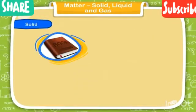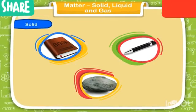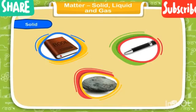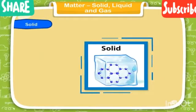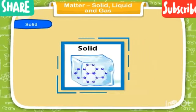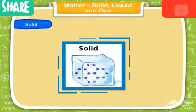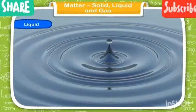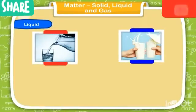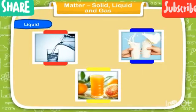The three states of matter are solid, liquid, and gas. Solid: touch a book, a pen, or a stone — all of them are hard. They are called solid objects. Solids are usually hard because their molecules are packed together very closely and tightly. Solids have a fixed shape and volume.